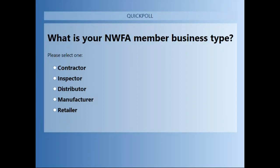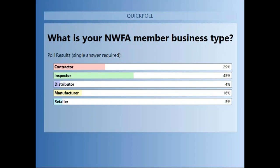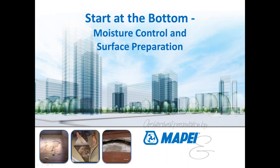Our first poll question is: what is your NWFA member business type? Are you a contractor, inspector, distributor, manufacturer, or retailer? The results show that 29% are contractors, 45% inspectors — so a lot of inspectors out there — followed by 16% manufacturers, 5% retailers, and 4% distributors. Thank you for participating in that poll.